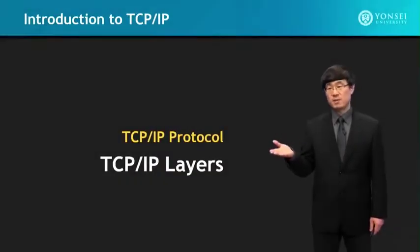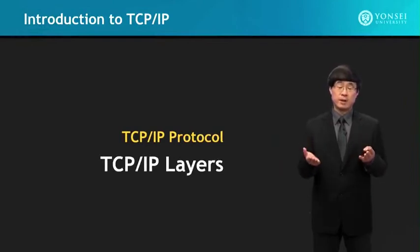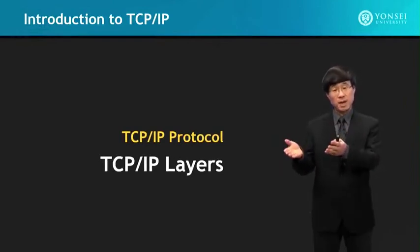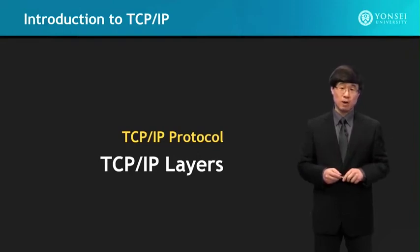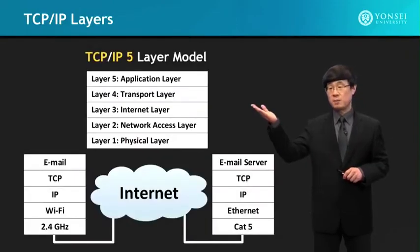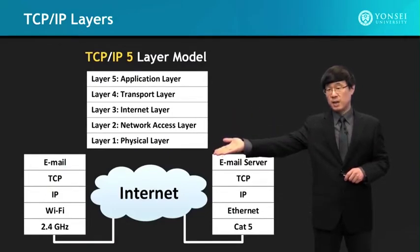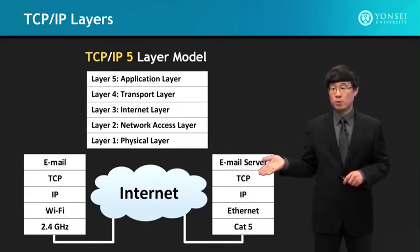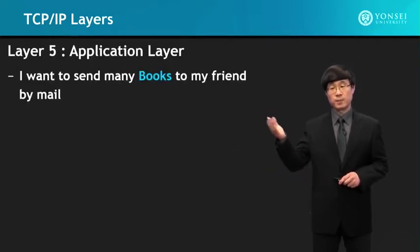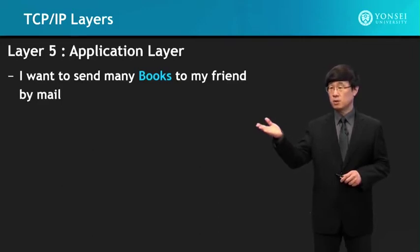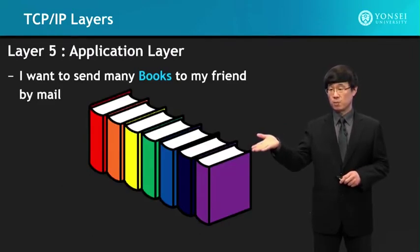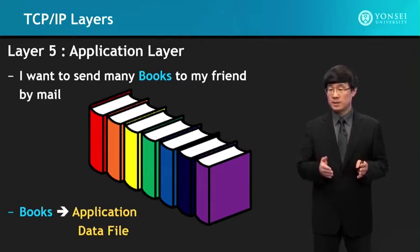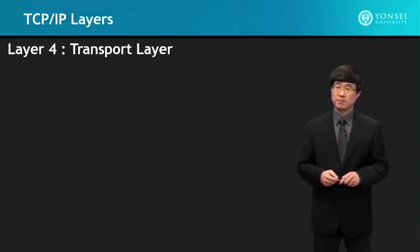In this lecture, we're going to study about the TCP/IP layers, using a comparison of how we actually send mail to show how the TCP/IP protocol works. Over there, you can see an email file that needs to be sent through Wi-Fi, connected to the Internet, to another computer connected to Ethernet. At the application layer, I want to send many books to my friend by mail — you can think of the books as the application data file.